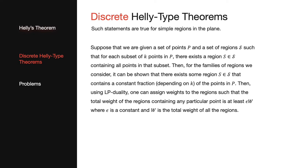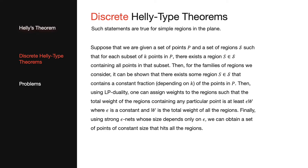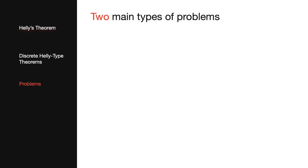Then, using LP duality, we can assign weights to the regions such that the total weight of the regions containing any particular point is at least epsilon times w, where epsilon is a constant and w is the total weight of all the regions. Finally, using strong epsilon nets, whose size depends only on epsilon, we can obtain a set of points of constant size that hit all the regions.